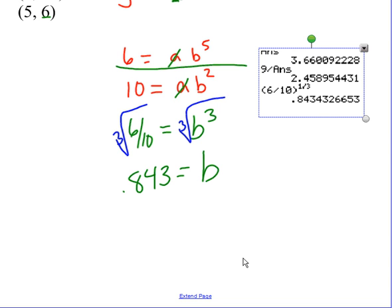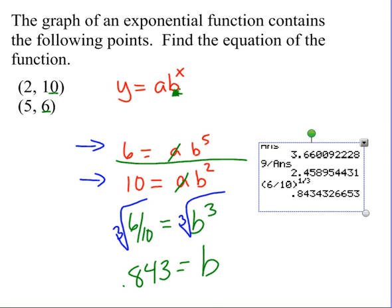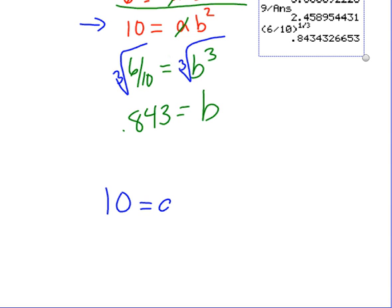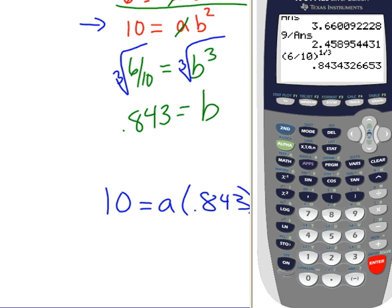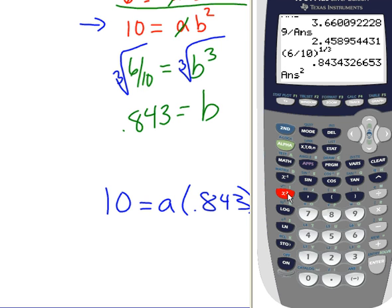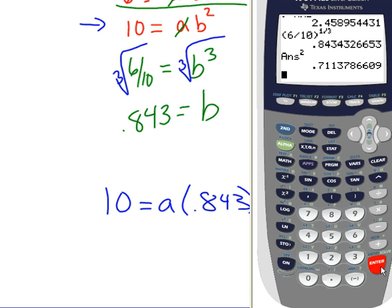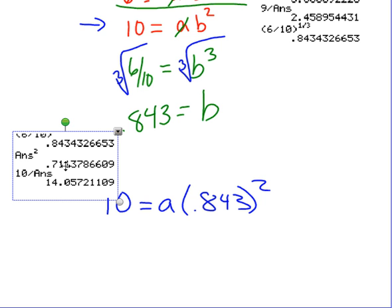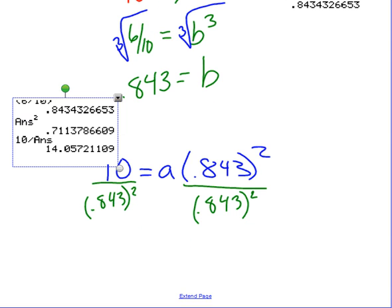Now I substitute this back into either equation, this guy or this guy, whichever one you want to use. I'm just going to use the squared one. So I have 10 equals a times 0.843 squared. And again, I'm not going to round this in my calculator. I'll leave it fine on my paper. But I want to make sure I get it exactly right on my calculator. So I square b, and then I take 10, and I divide by that number. And that will give you your a value. We end up with a equals 14.057.